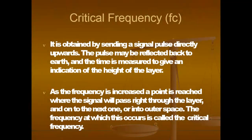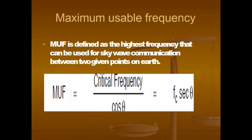Critical frequency FC: it is obtained by sending a signal pulse directly upwards. The pulse may be reflected back to Earth and the time is measured to give an indication of the height of the layer. As the frequency is increased, a point is reached where the signal passes right through the layer into outer space. The frequency at which this occurs is called the critical frequency. Maximum usable frequency (MUF) is defined as the highest frequency that can be used for skywave communication between two given points — transmitter and receiver — on Earth. MUF = FC / cos θ = FC × sec θ.